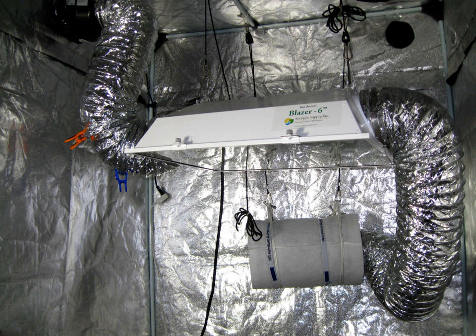A cold cathode is a cathode that is not electrically heated by a filament. A cathode may be considered cold if it emits more electrons than can be supplied by thermionic emission alone. It is used in gas discharge lamps, such as neon lamps, discharge tubes, and some types of vacuum tube. The other type of cathode is a hot cathode, which is heated by electric current passing through a filament. A cold cathode does not necessarily operate at a low temperature, it is often heated to its operating temperature by other methods, such as the current passing from the cathode into the gas.